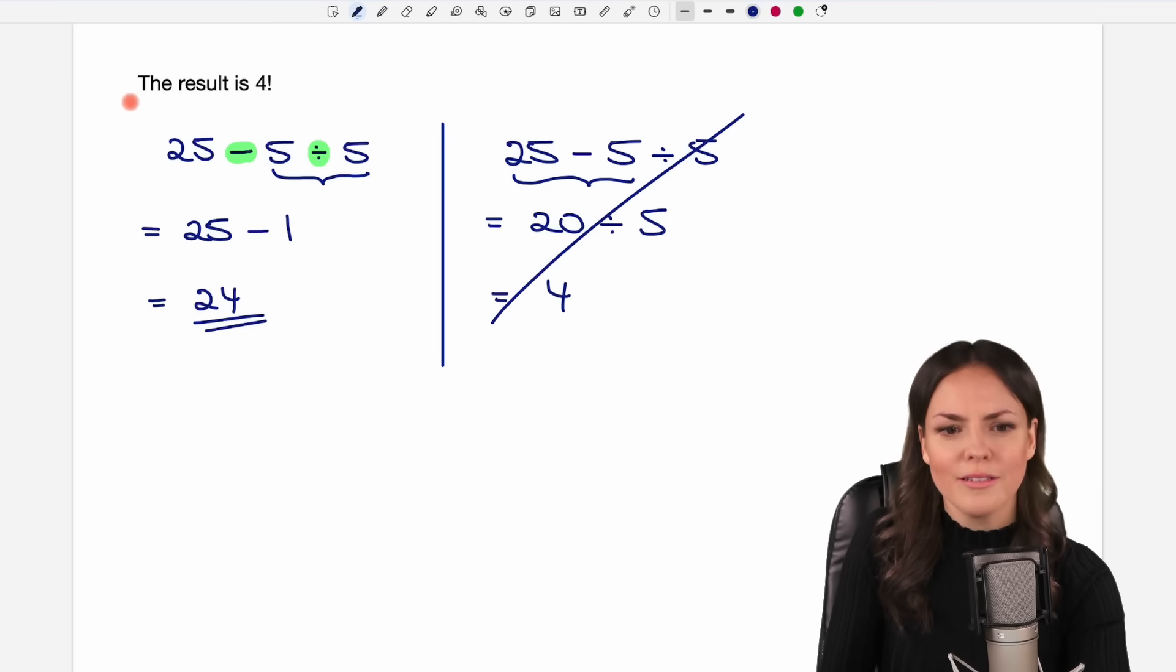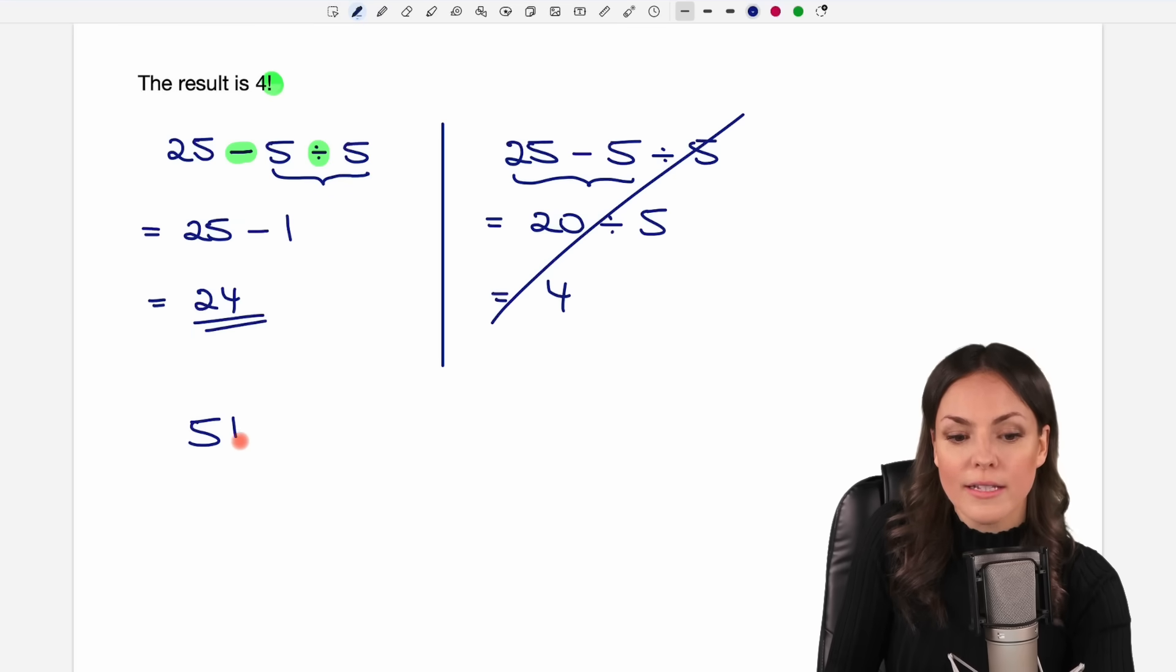So what do they want from us here? The result is 4. Could also mean the result is 4 factorial. This exclamation mark here in math means something. So if you have 5 exclamation mark in math, in a math context, this is 5 factorial.